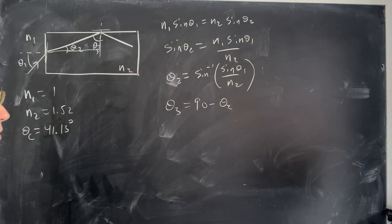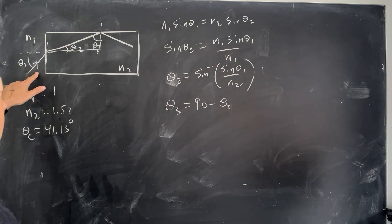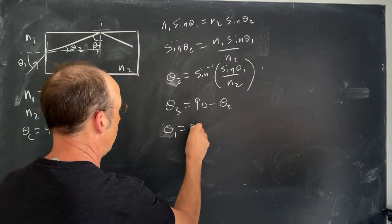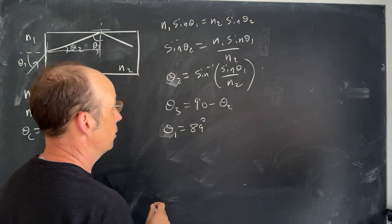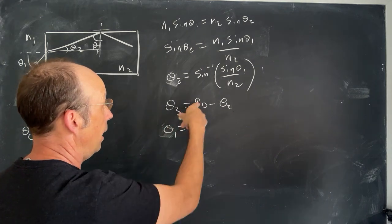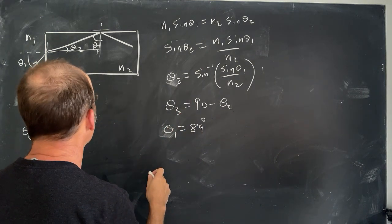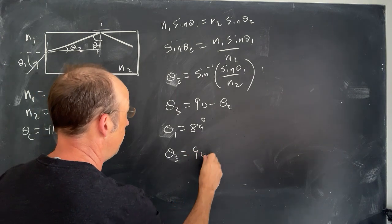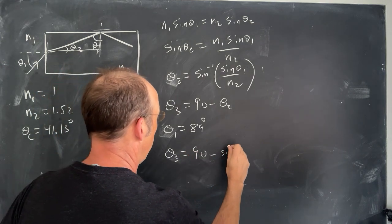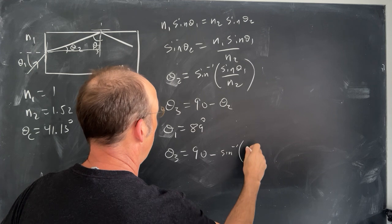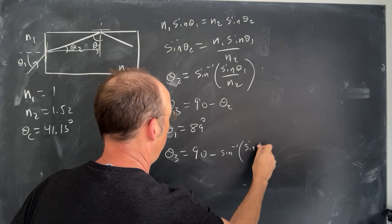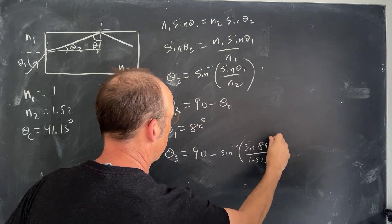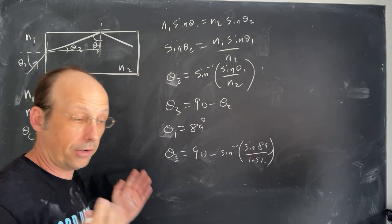Okay, let's just do this. Let's just say I come in at an 89 degree angle. Let's just pick. Theta 1 is 89 degrees. So I can solve for theta 2, and I can solve for theta 3. So let's solve for theta 3. Theta 3 would be 90 minus the inverse sine of the sine of 89 over 1.52. Let's just plug in our calculator and see what happens.